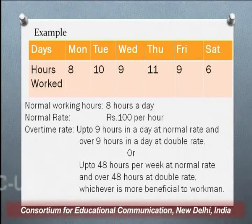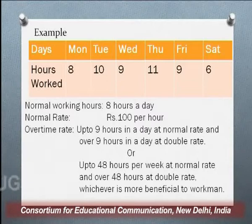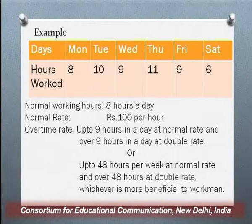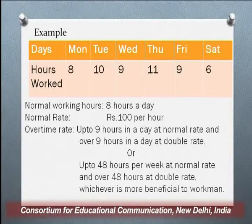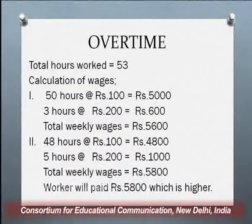The overtime rate in this organization is: up to 9 hours in a day, normal rate will be paid; over 9 hours in a day, double the rate will be paid; or up to 48 hours per week, normal rate, and over 48 hours, double the rate — whichever is more beneficial to the workers. In this example, the total number of working hours which the worker is putting in is 53 hours, adding up Monday to Saturday.